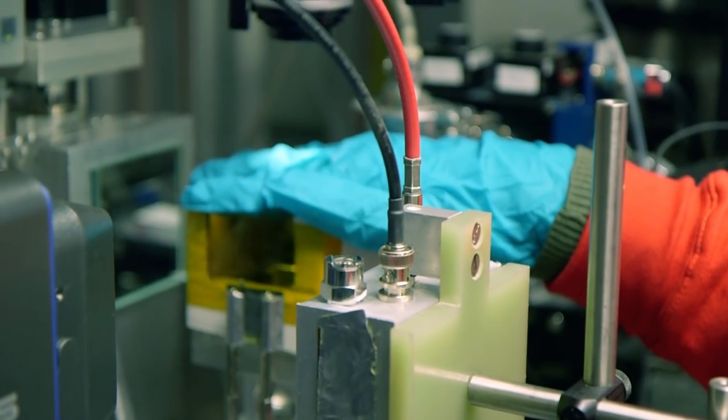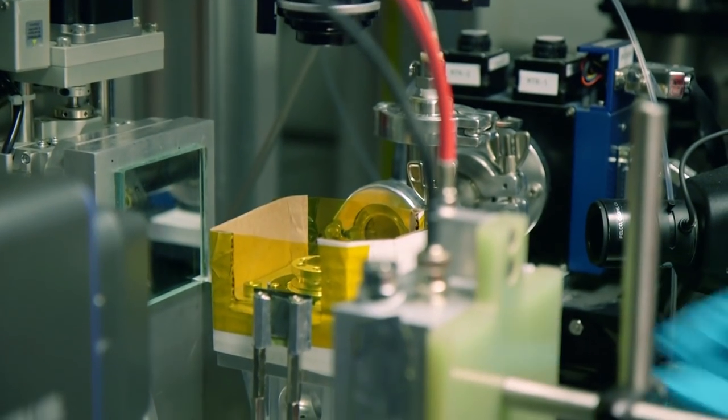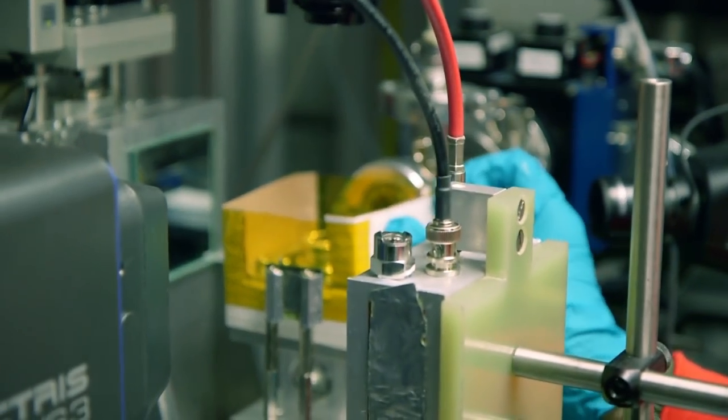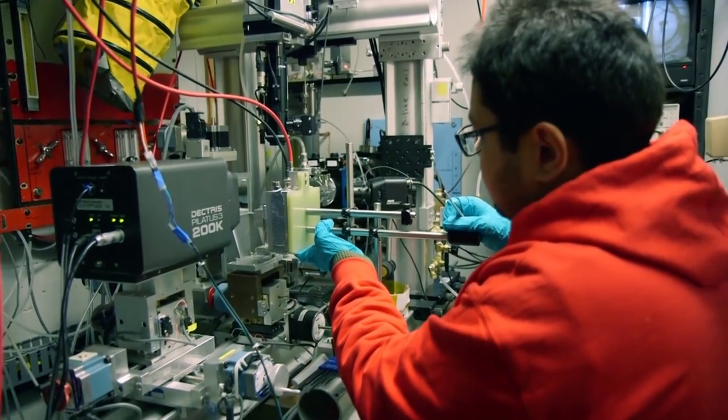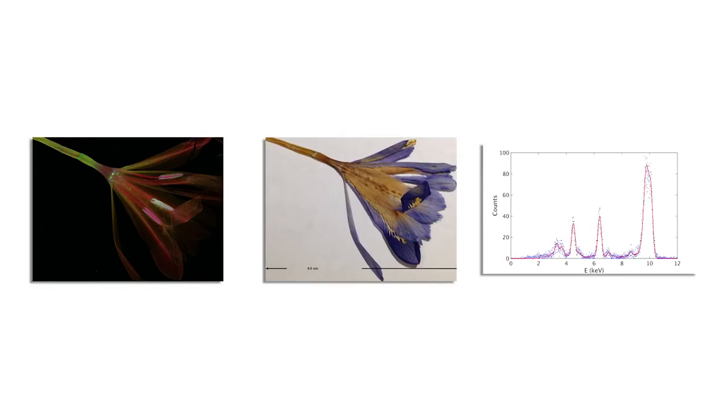When the X-rays hit a sample, they are either absorbed or scattered. A state-of-the-art detector collects and records the scattered X-rays coming off the sample. From this information, scientists can learn about the structure and elemental composition of the sample.